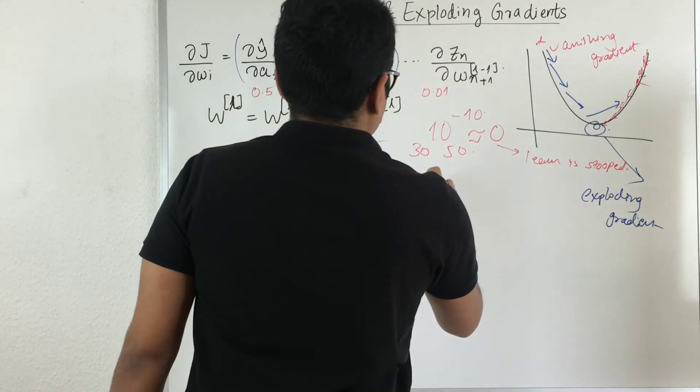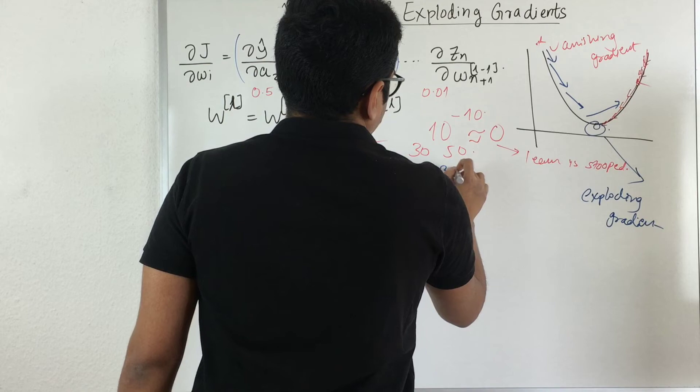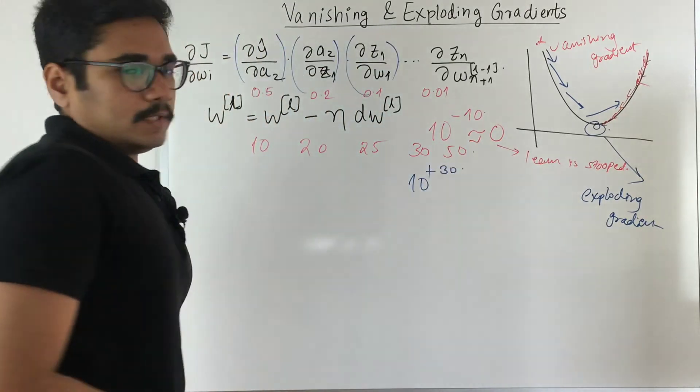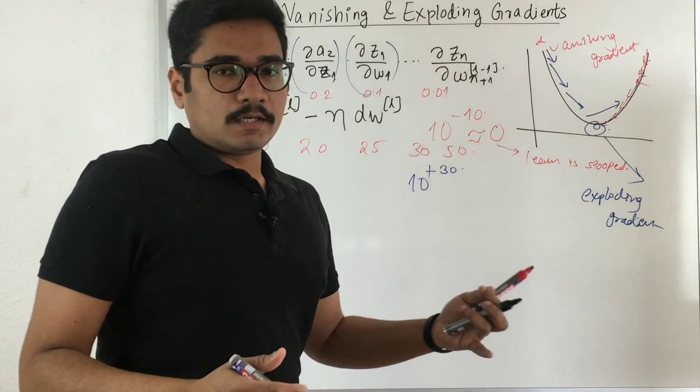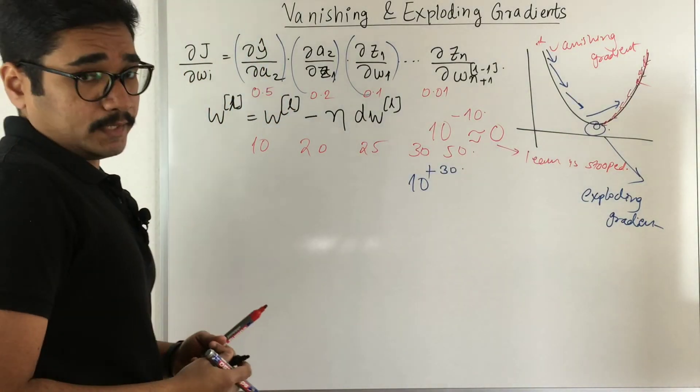Where your value can be say like 10 raised to positive 30. So that's a very high value, means you are learning nothing. So that becomes your exploding gradient.